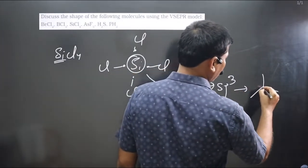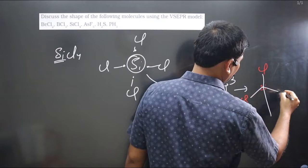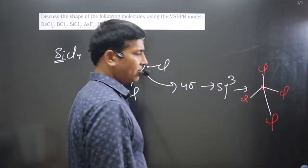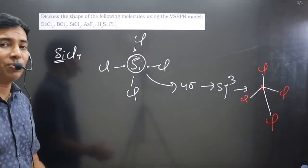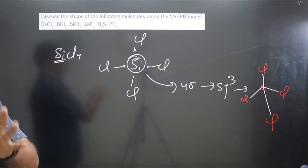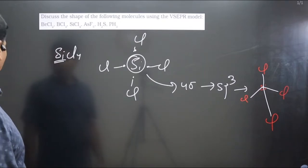For four sigma bonds, hybridization will be sp3 and the shape will be tetrahedral. Silicon is at the center with four Cl atoms arranged tetrahedrally. The bond angle is 109 degrees 28 minutes.